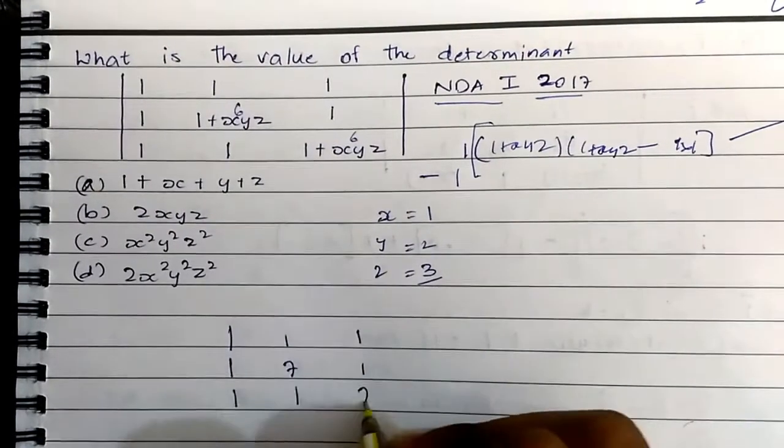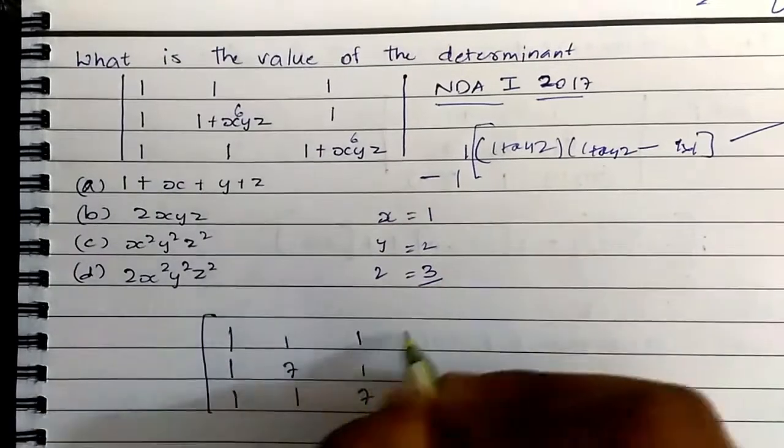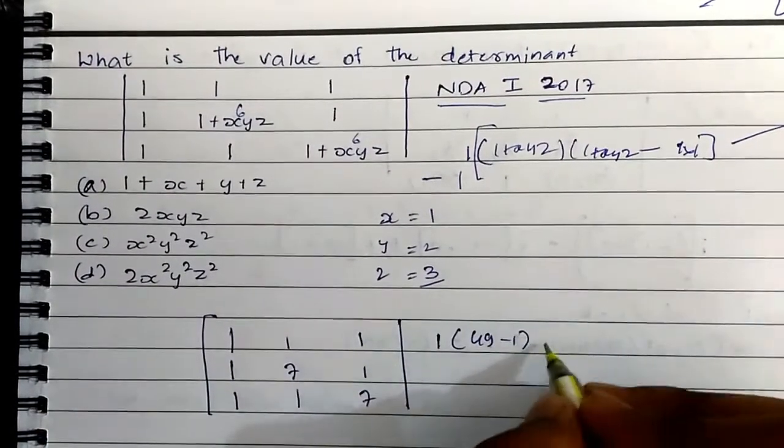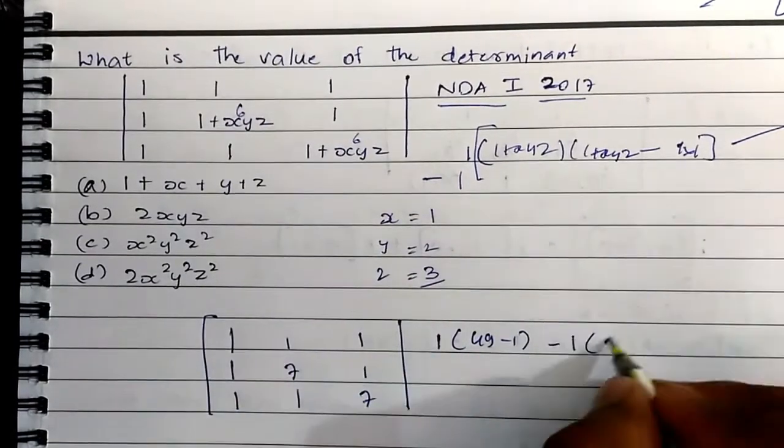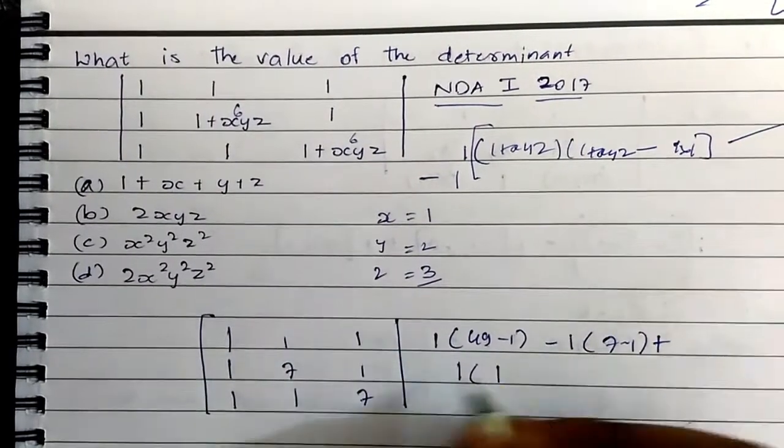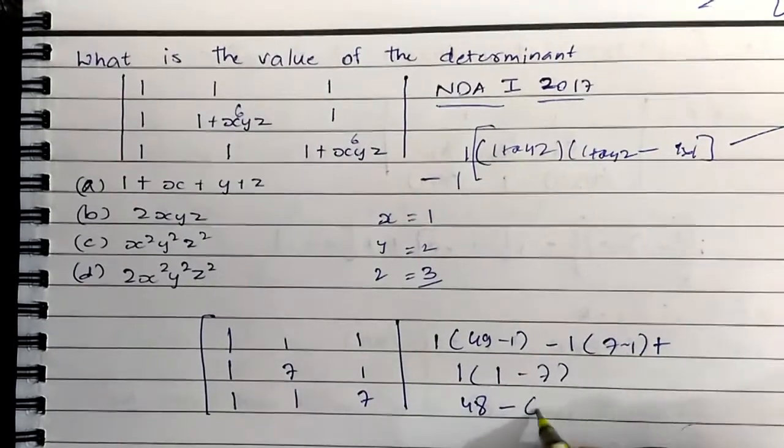It'll be easy for us to find the determinant of this matrix. So it'll be 1 times (49 minus 1), minus 1 into (7 minus 7), plus 1 into (1 minus 7). It is 48 minus 6.